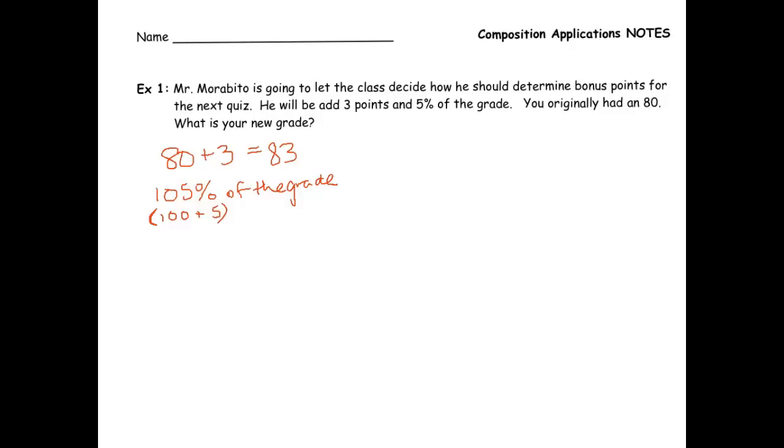So to do that, let's say we'll take our percent, we always like to move the decimal two places to the left to change it to the decimal, so 1.05 of the grade, which is now an 83. And then I get my calculator out, 1.05 times 83 gets me an 87.15. That would be our new grade.